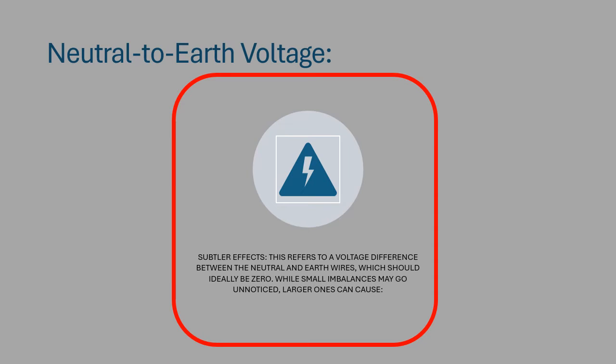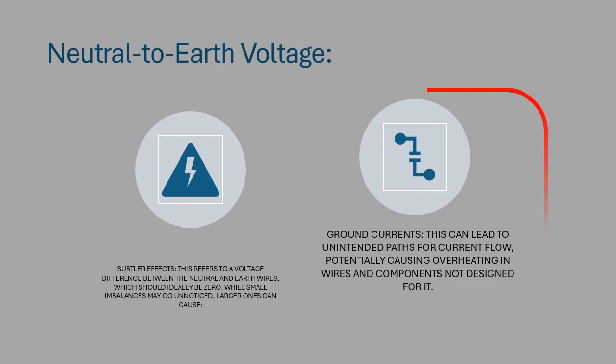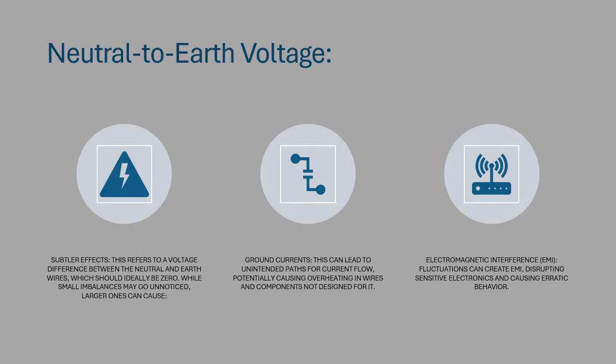While small imbalances may go unnoticed, larger ones can cause Ground Currents. This can lead to unintended paths for current flow, potentially causing overheating in wires and components not designed for it.